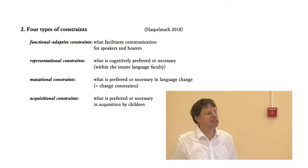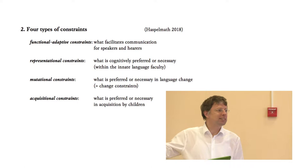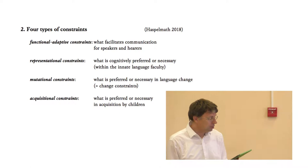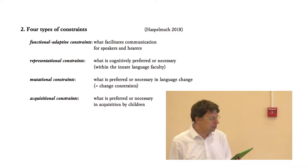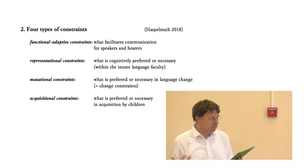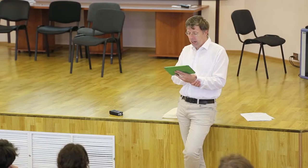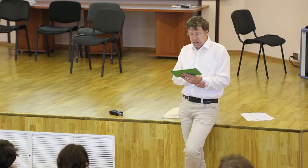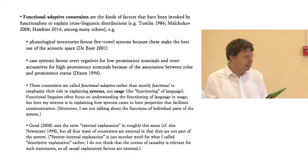After being stimulated by Anderson to think about these things, I invented this new term: mutational constraint. We already saw there are functional adaptive constraints — what facilitates communication for hearers and speakers — these are the kinds of constraints I'm most interested in. Then there are representational constraints — what is cognitively demanded within the innate language faculty. Then mutational constraints — what is preferred or required in language change; we can also say 'change constraints.' And then Anderson also talks about acquisitional constraints, which I'll mention later.